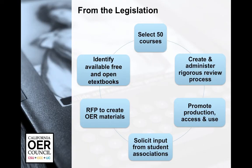From the legislation and state bills, we have an outline: select 50 courses, create and administer a rigorous review process, promote production, access and use, solicit input from student associations, create an RFP to create OER materials, and identify available free and open e-textbooks.